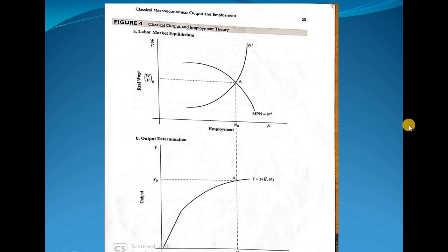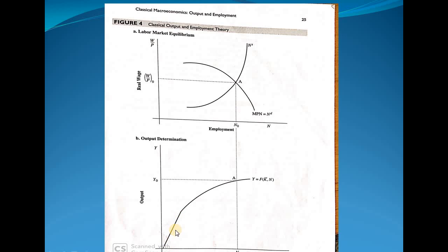Now we are on to the determination of the equilibrium level of employment and output. We have the supply of labor curve and the labor demand curve — we know why the supply curve is upward sloping and the demand curve downward sloping. Their intersection determines the equilibrium level of employment, which turns out to be N₀, and the equilibrium real wage W/P₀. On the lower diagram, employment is on the x-axis and output on the y-axis, showing the production function, whose intersection determines the equilibrium level of output.